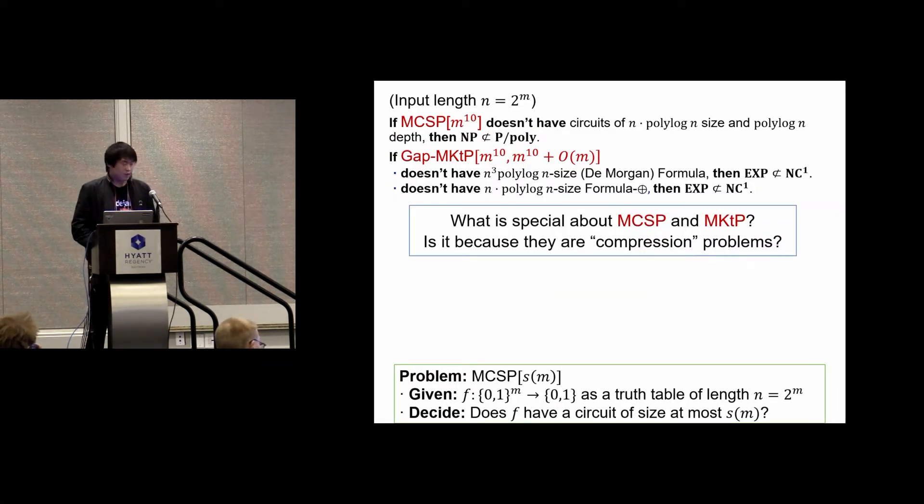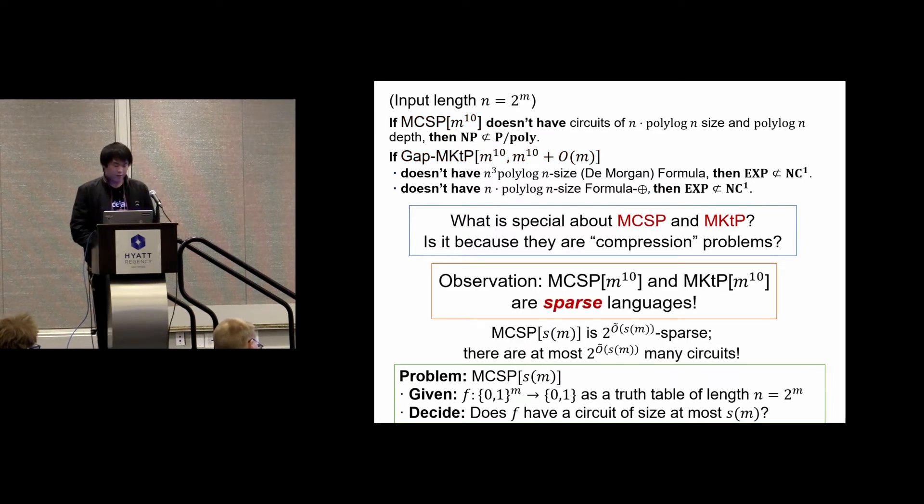Given these previous results, it is natural to ask the following question: What is special about MCSP and MKTP? Why do they have such surprising magnification phenomenon? Is it because they are compression problems? Our observation is that these problems are all sparse languages because of the small size parameter m^10. The number of yes instances in MCSP S(m) is at most the number of different circuits of size at most S(m). So MCSP m^10 is actually a quasi-polynomially sparse language. And for MKTP, it is also a sparse language for similar reasons.